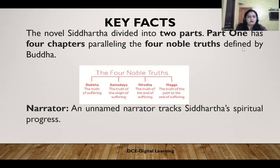Now let us concentrate on the key facts of the novel. The novel Siddhartha is divided into two parts. Part one has four chapters paralleling the four noble truths defined by Buddha: Dukka — the truth of suffering; Samudaya — the truth of the origin of suffering; Nirodha — the truth of the end of suffering; Magga — the truth of the path to end suffering. The four chapters of part one more or less follow these four themes as expressed by the great Lord Buddha.